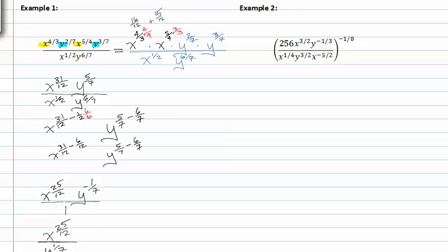Let's look at example two. I'm going to find all my negative exponents first and shift them across the fraction bar so I don't have to worry about negative exponents. I also notice that I have two hundred and fifty-six, which is the same as two to the eighth. Before I flip my fraction over, I'm going to simplify what's inside. So now I have two to the eighth, x to the three-halves, x to the positive five-halves.